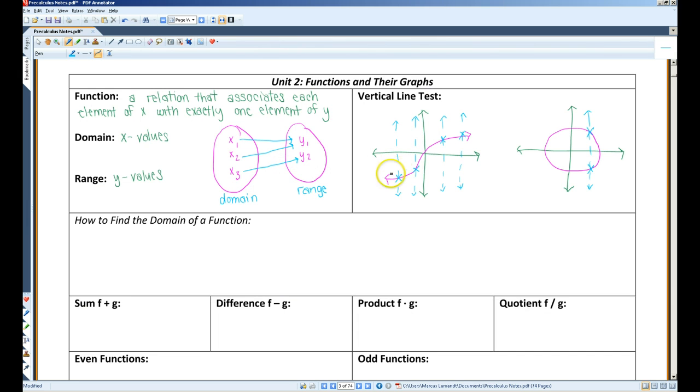Now, the graph of a function cannot contain two points with the same x coordinate and different y coordinates. So we have something called the vertical line test. The vertical line test basically states that a set of points in the xy plane is the graph of a function if and only if every vertical line intersects the graph at at most one point.